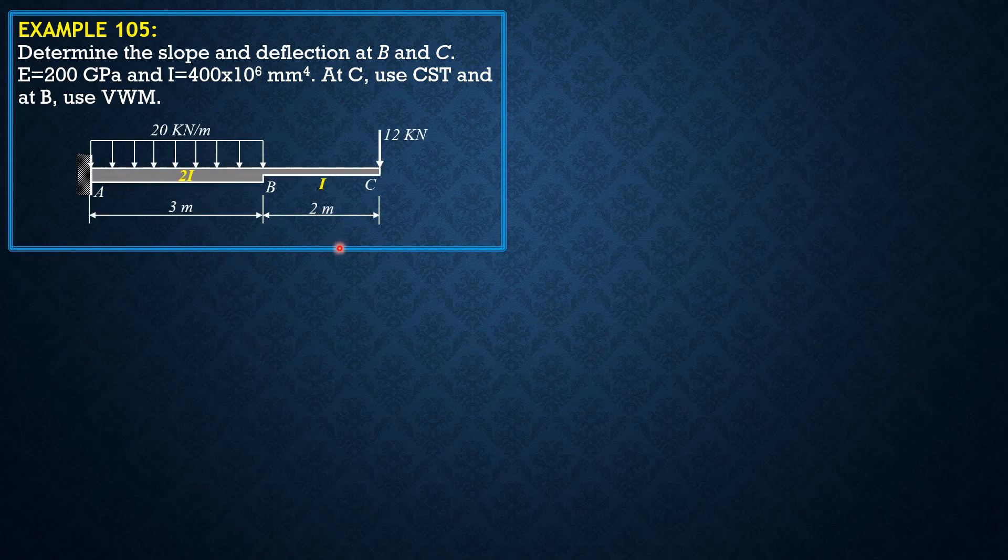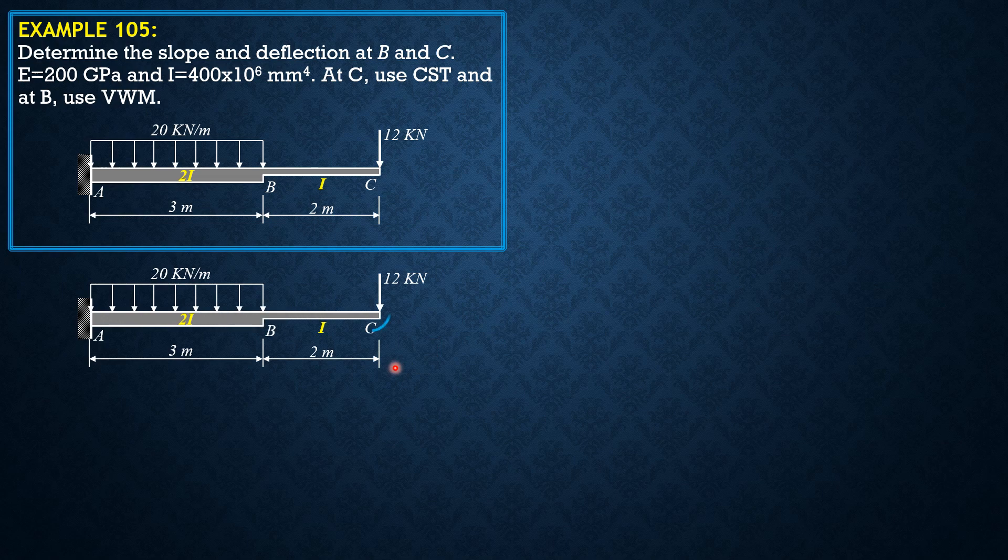Here is the cantilever beam. So let's have C by Castigliano's theorem. Let's apply a counterclockwise couple as shown in this figure. And let's select this as our sections, two sections only.